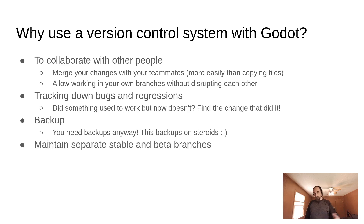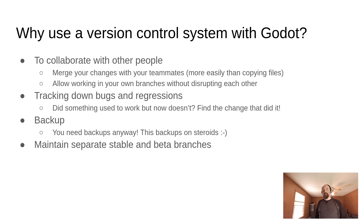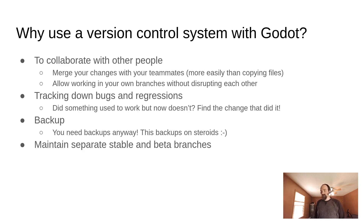It allows you to maintain separate stable and beta branches, which is something you're going to want to do. As soon as you release your game — even if it's just an early release to trusted people to test it — you're going to want to have a separate branch or tag identifying that so you can keep working on your game after you've shown it to people. Or with your QA team, you need to have a stable marker for what you sent to them while the development team has kept working on the game after that.